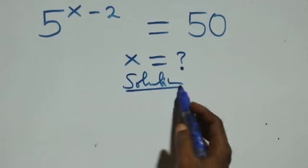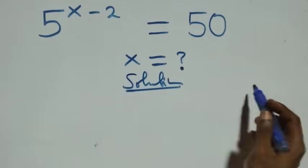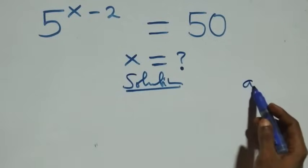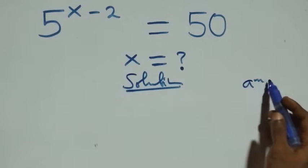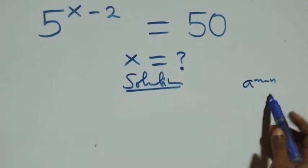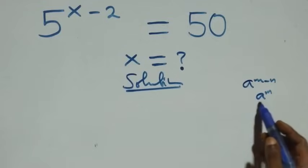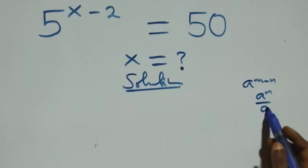What we have here: this solution uses a raised to power m minus n, which can be written as a raised to power m over a raised to power n.